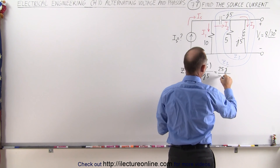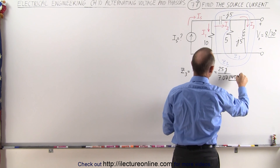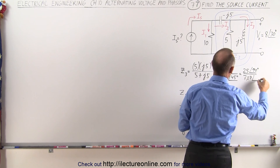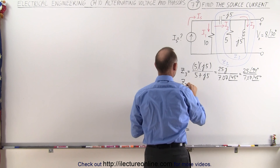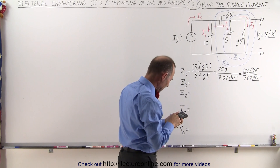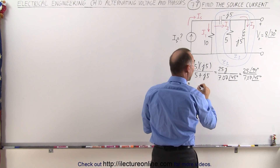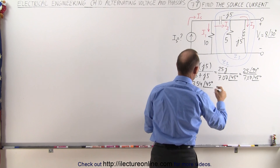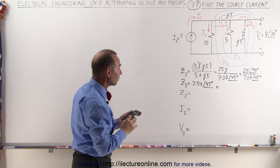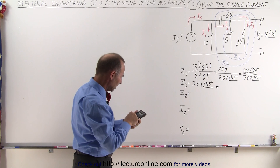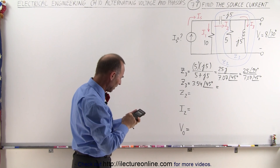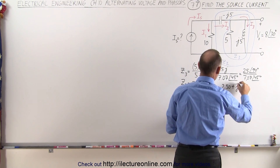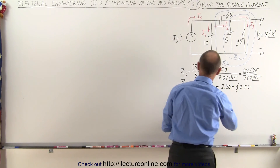So that gives us 7.07 with a phase angle of 45 degrees. In the numerator that becomes 25 with a phase angle of 90 degrees, divided by 7.07 with a phase angle of 45 degrees. So Z3 has a magnitude of 3.54 with a phase angle of 45 degrees. Now putting that into real and imaginary part format: taking the cosine of 45 degrees and multiplying by 3.54 gives us 2.50, so Z3 equals 2.50 plus J2.50.